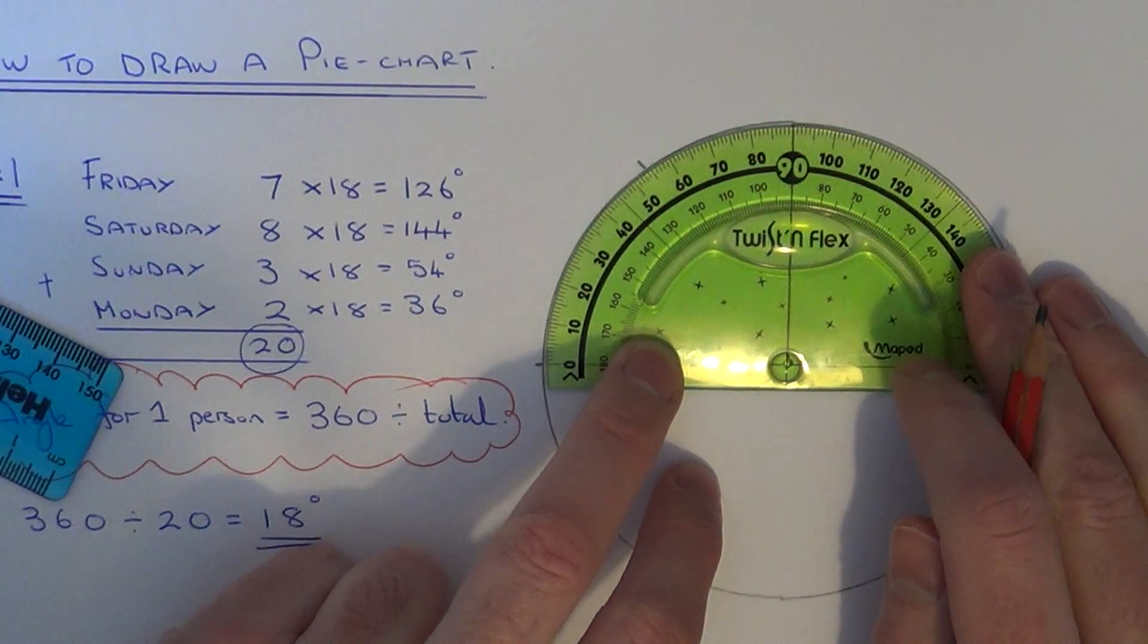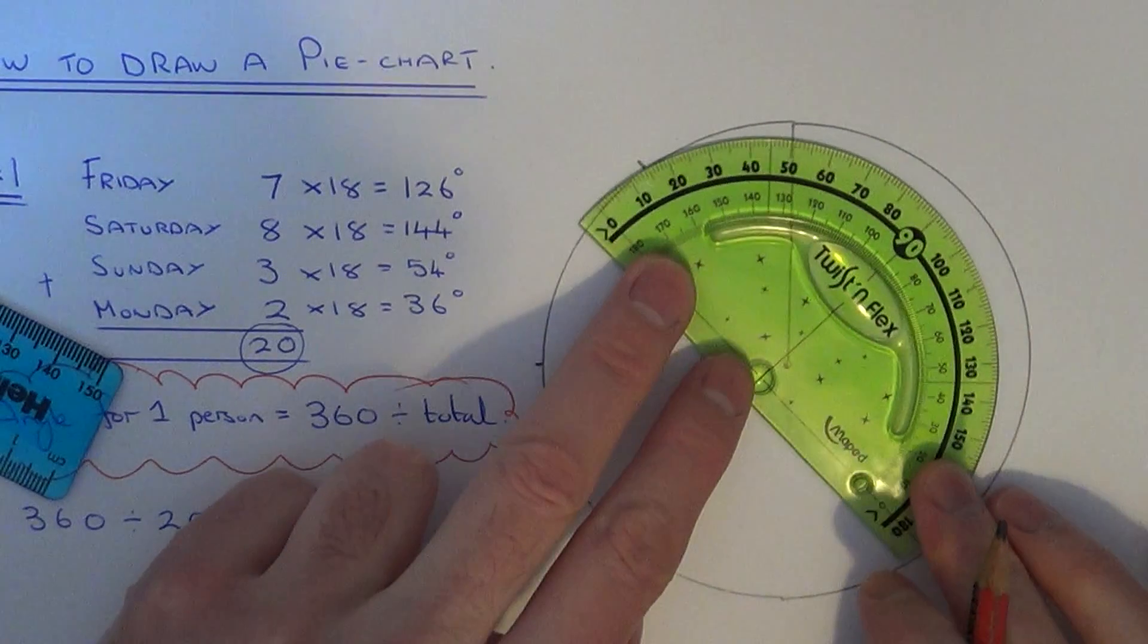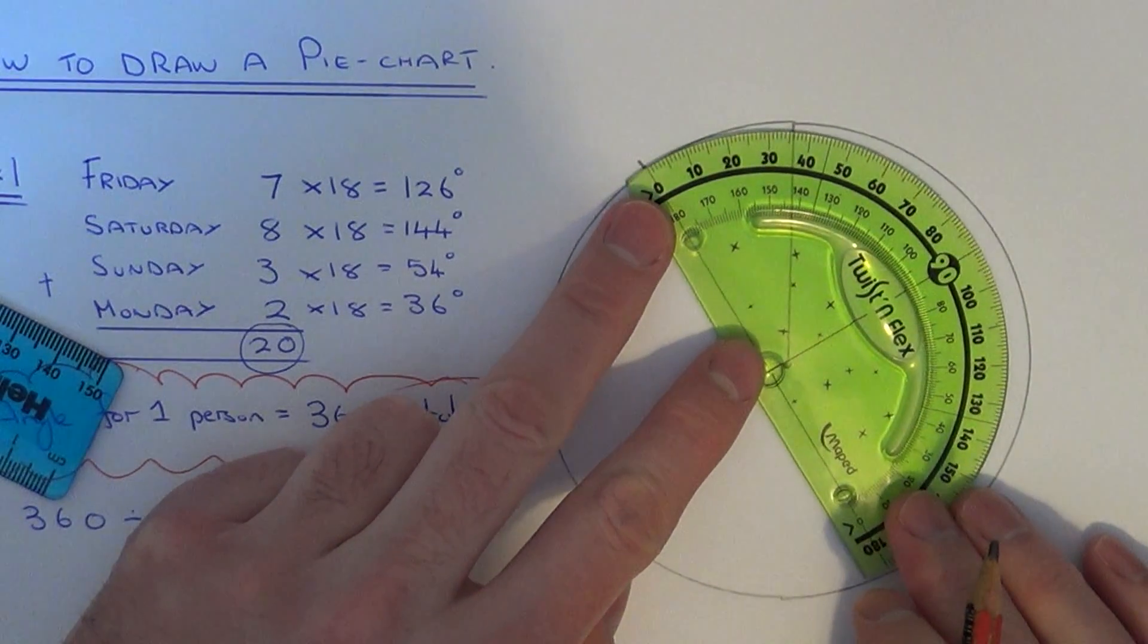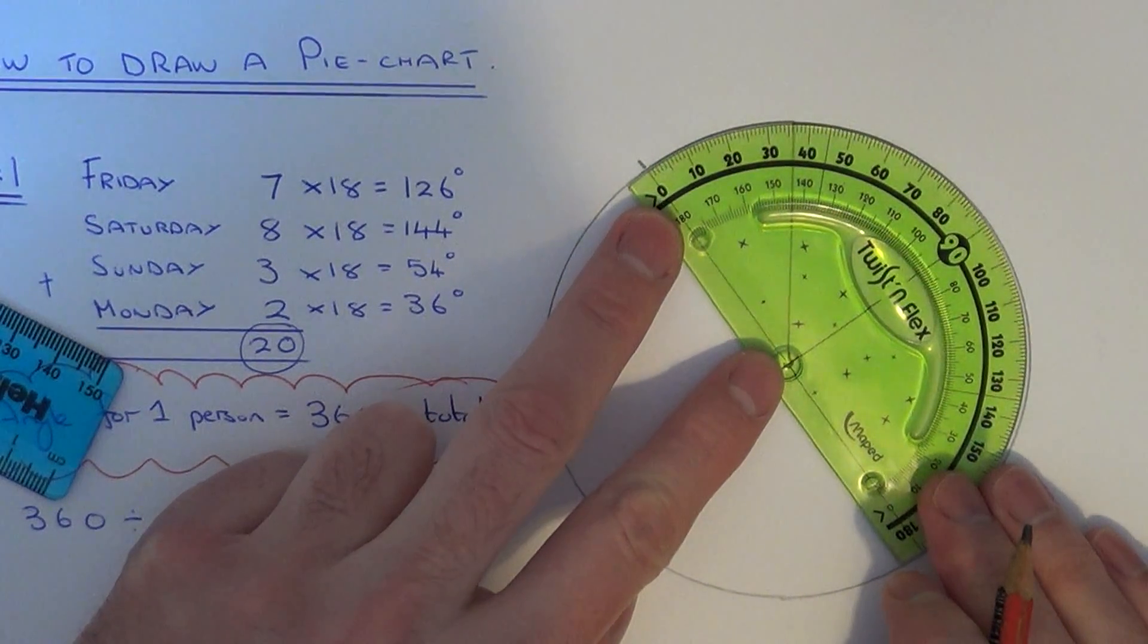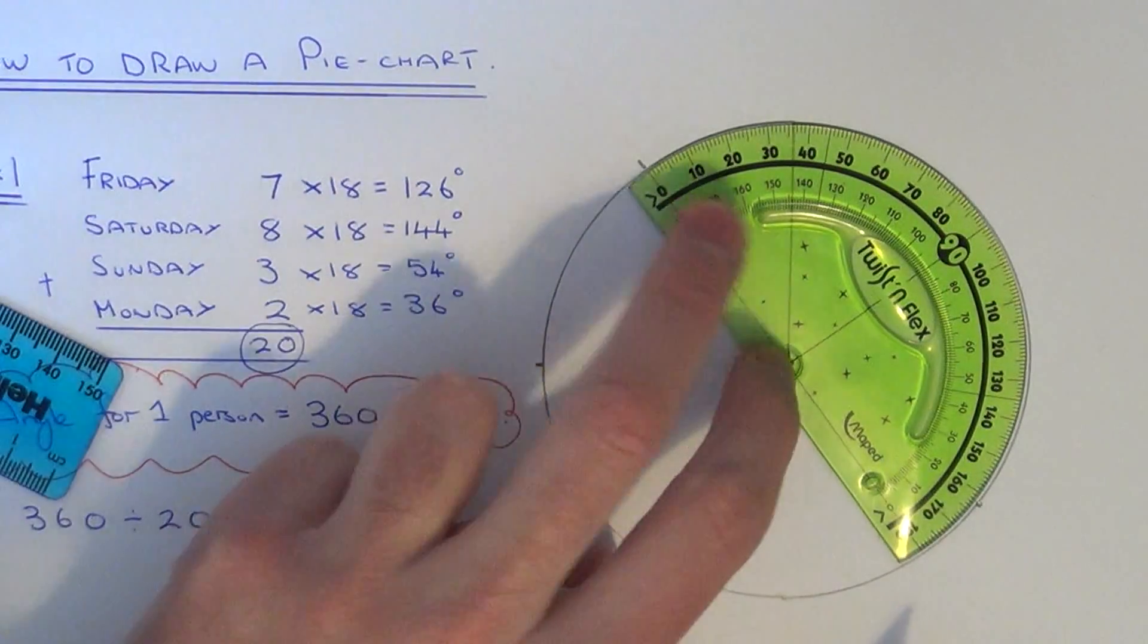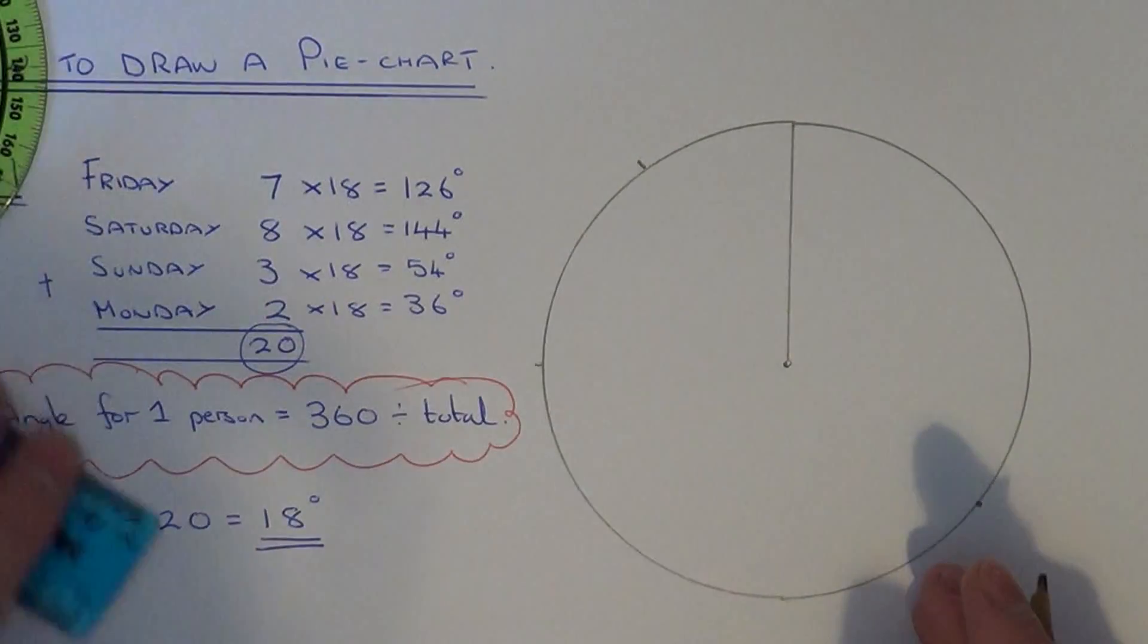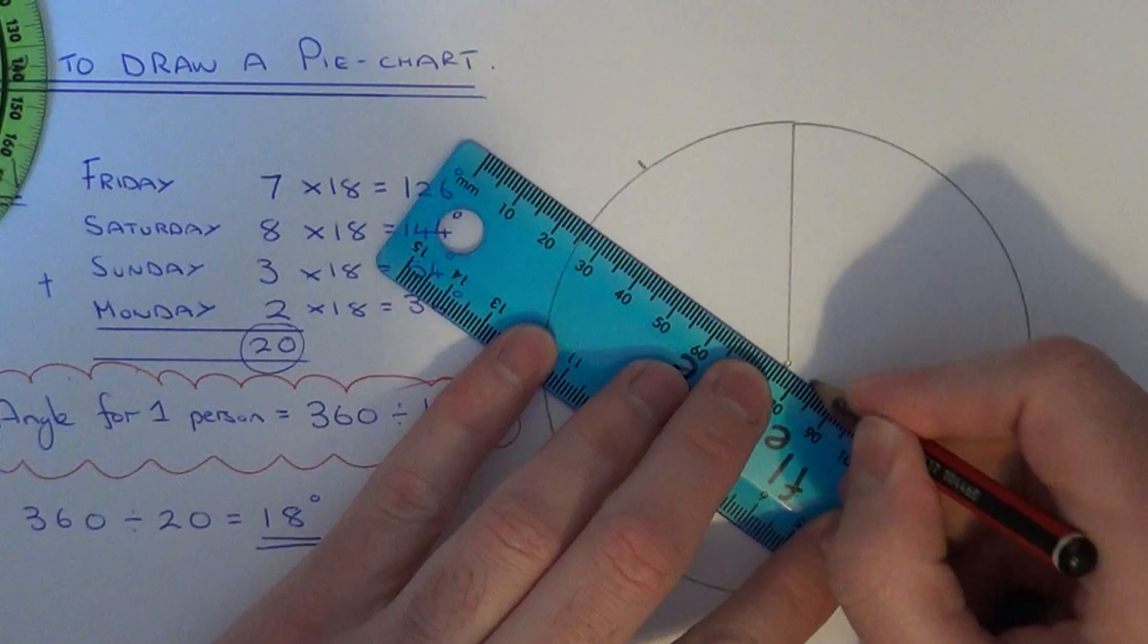And then the final one is 36. Let's just check that last bit is 36. Yep, as you can see that's spot on. So let's just draw the lines in.